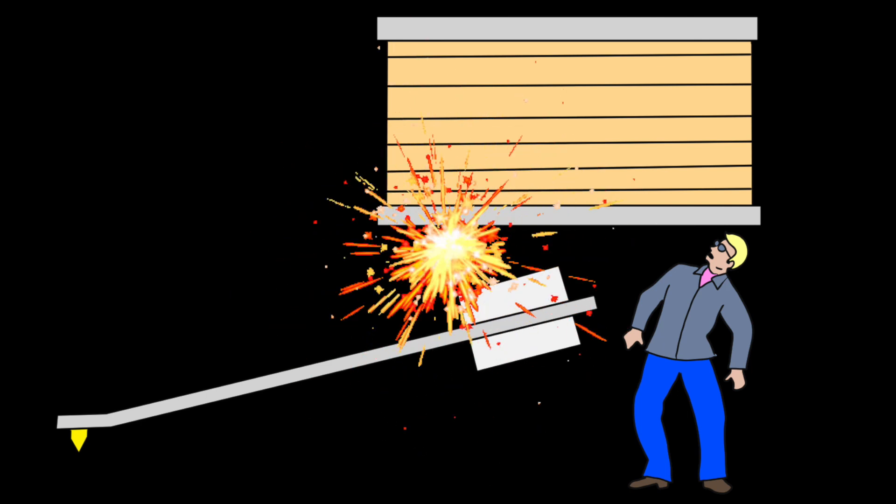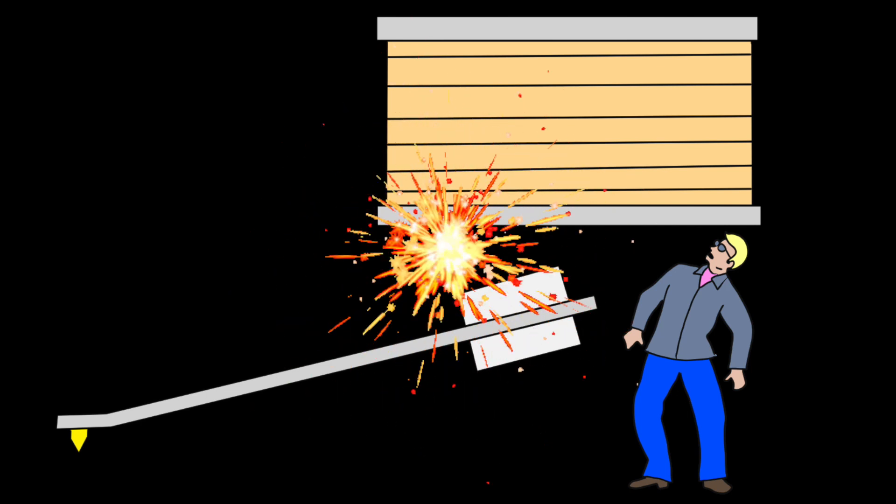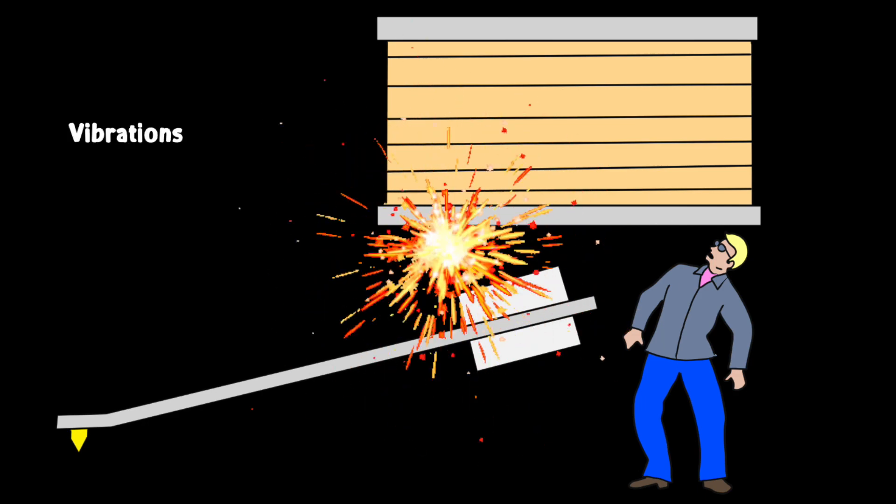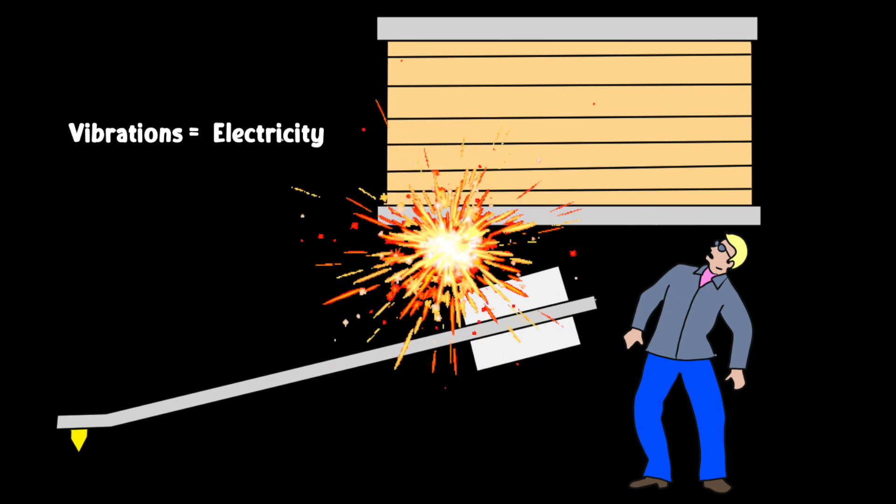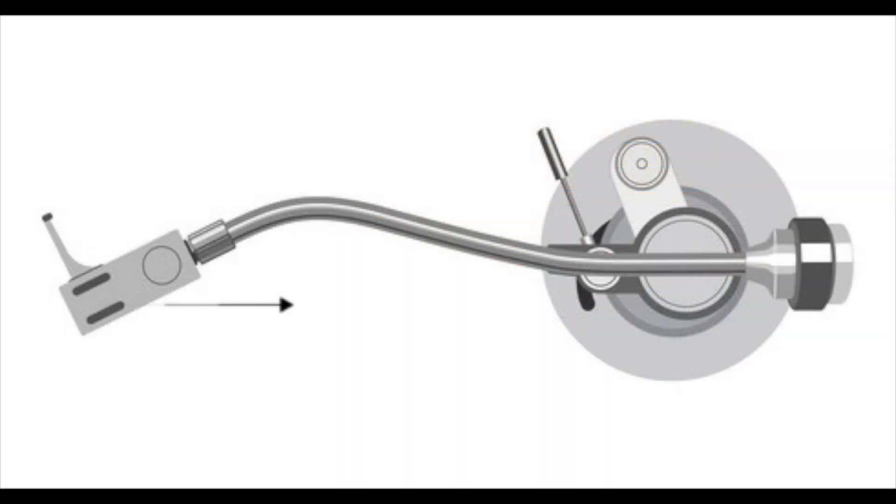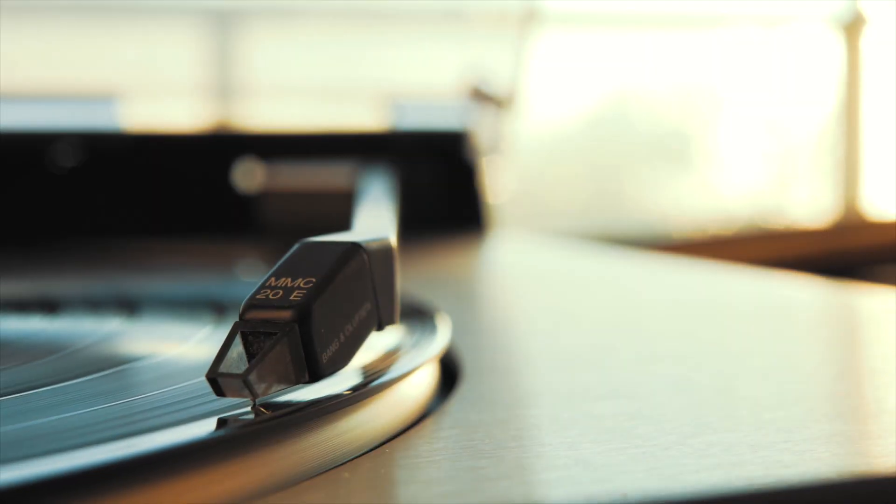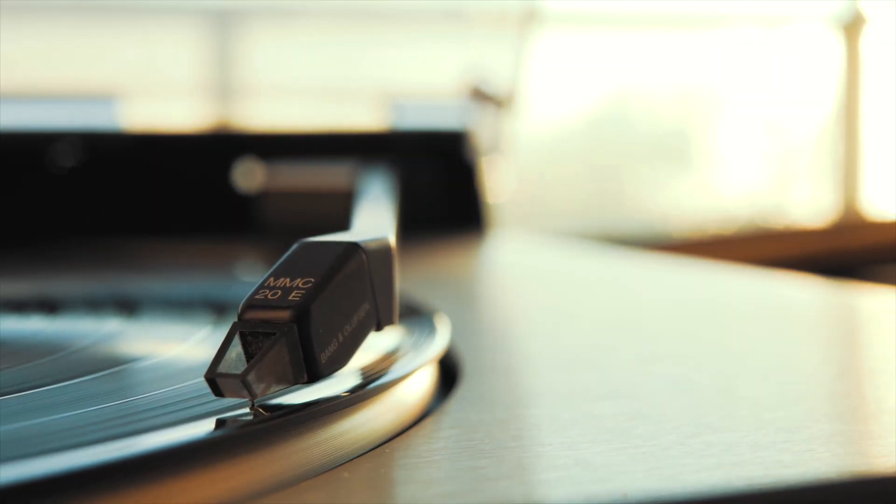Think of it like a transducer. It converts one form of energy, the vibrations from the stylus, into another form of energy, a small volt of electricity. This volt is carried back along the tone arm's wires to be converted once again into something else. Sound. That's pretty cool, huh?